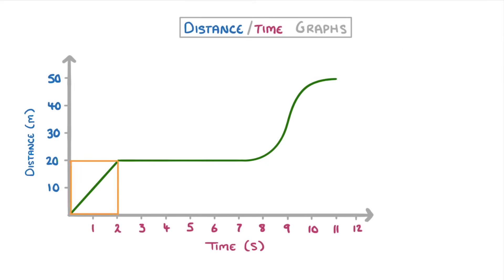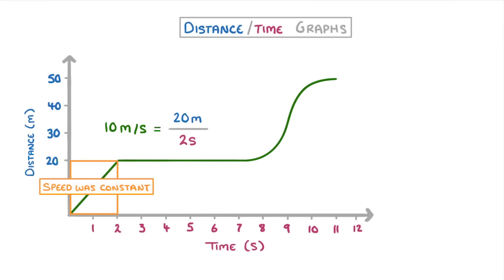So for this first section, where she travels 20 meters in 2 seconds, the gradient would be 20 divided by 2, so 10 meters per second. And as it's a straight line, her speed must have been constant through this period.